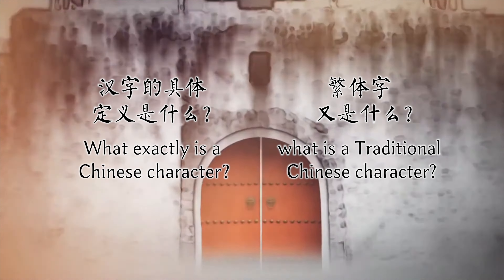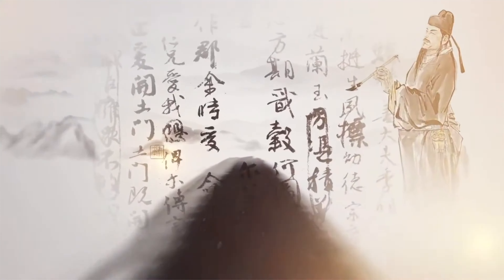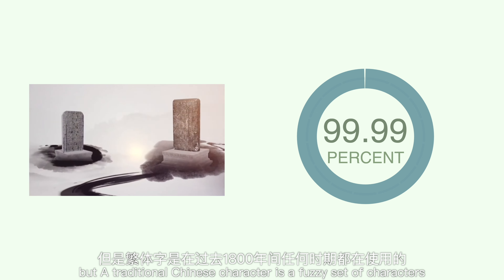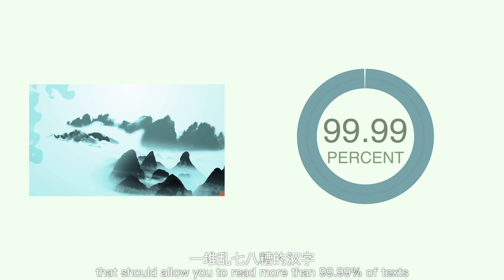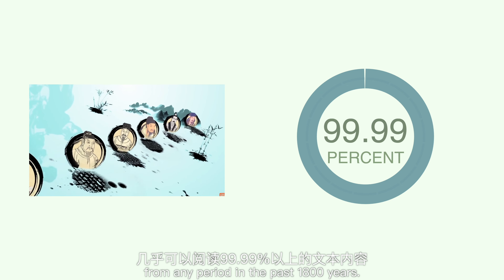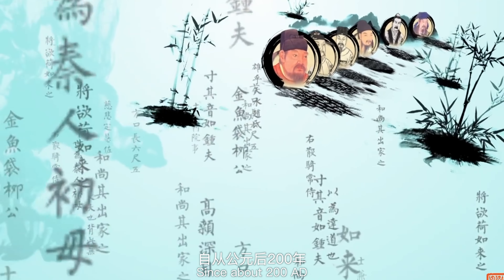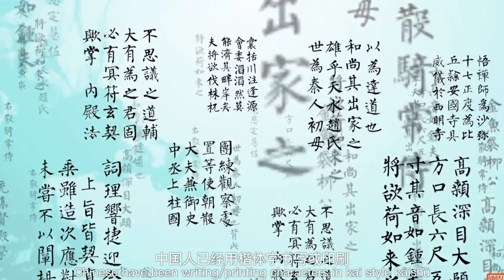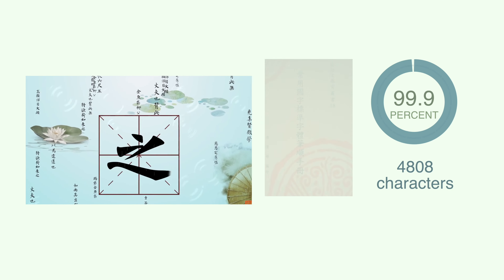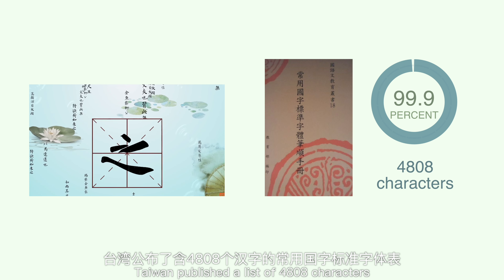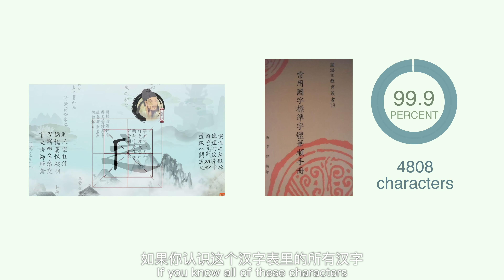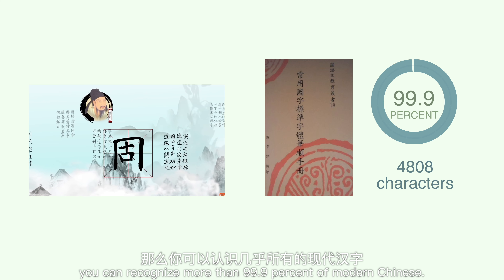What exactly is a Chinese character, and what is a traditional Chinese character? A traditional Chinese character is a fuzzy set of characters that should allow you to read more than 99.99% of texts from any period in the past 1,800 years. Since about 200 AD, Chinese have been writing or printing characters in Kai-style, Kai-shu, which are basically the forms of characters used today. Taiwan published a list of 4,808 characters called the Chang-yong Guo-zi-biao-jun Ziti-biao.